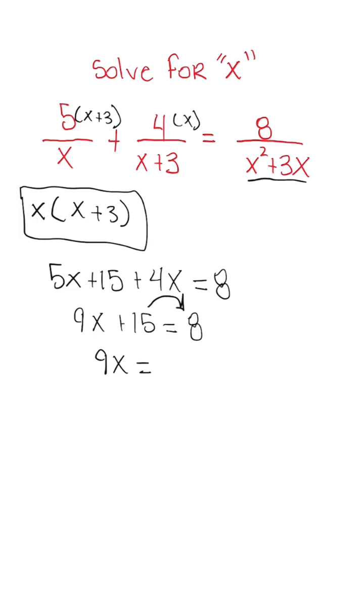We're going to get 9x is equal to 8 minus 15, which gives us negative 7. And then we just need to divide by our coefficient in front of the variable to get the variable by itself.